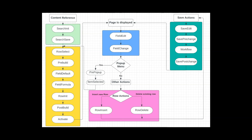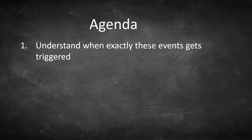In the previous episode we had an overview about all the PeopleCode events which are available, and with the help of an event flow diagram we discussed the order in which they are executed for a given transaction. In this episode we will discuss the first two events in the event flow diagram — Search Init and Search Save — and we will understand when exactly these two events get triggered.